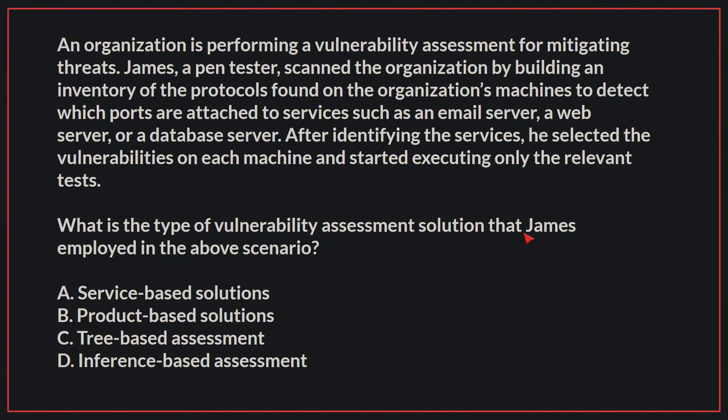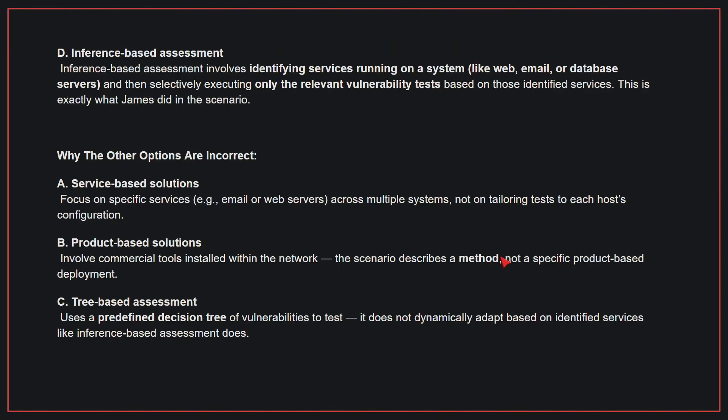What is the type of vulnerability assessment solution that James employed? The correct answer is D. Inference-based assessment. Inference-based assessment involves identifying services running on a system — like web, email, or database servers — and then selectively executing only the relevant vulnerability tests based on those identified services. This is exactly what James did in the scenario.